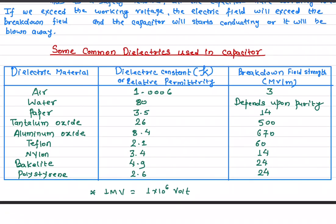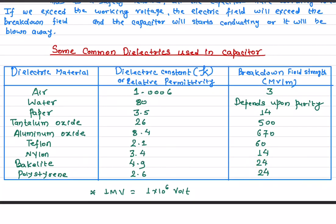Similarly for nylon, water — depending on its purity — and bakelite, the breakdown field is 24 megavolts per meter. We should never exceed the breakdown voltage. If a capacitor uses bakelite and the electric field exceeds 24 megavolts per meter, it will start conducting and the capacitor will blow away.